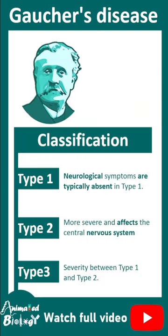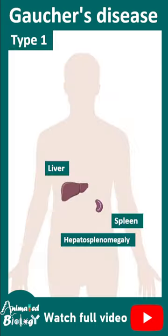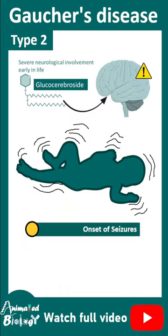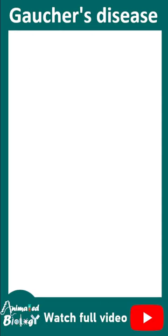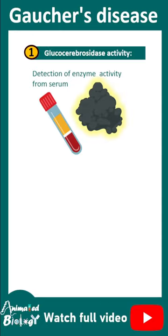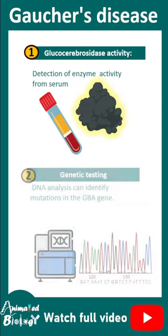There are different types of Gaucher disease. Type 1 does not involve the nervous system and presents with symptoms such as hepatosplenomegaly. Type 2 involves neurological complications including seizures, motor skill problems, and decreased muscle tone. The disease can be detected using a serum-based enzyme test.